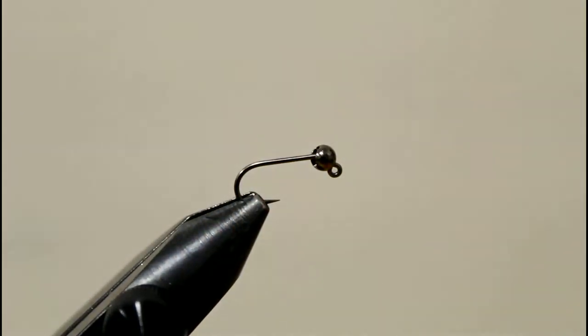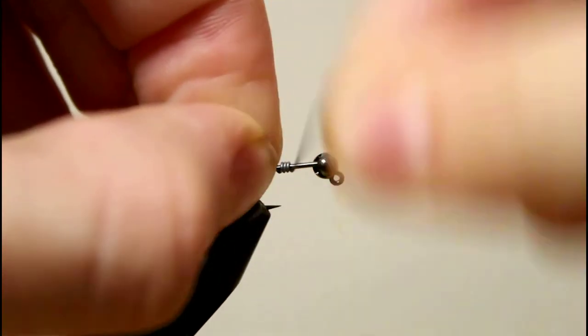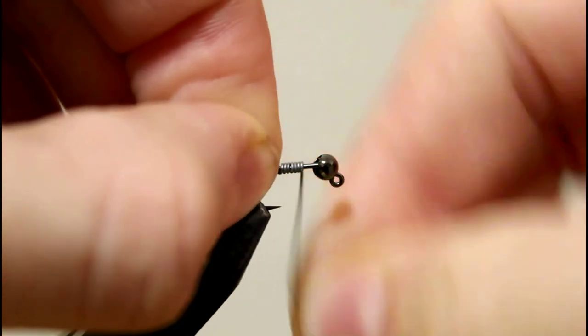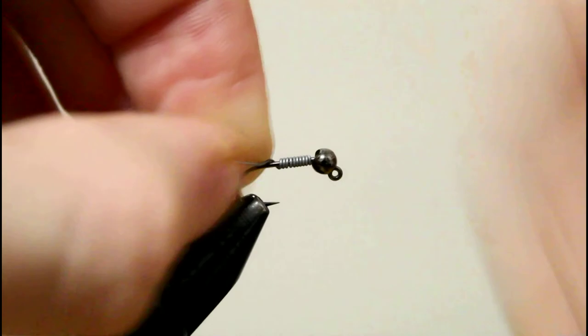We're gonna start off with a size 16 jig hook and a 1/8 inch tungsten bead. I'm gonna start by wrapping some lead wire around the shank of the hook 10 times or so. Five, six, seven, eight, nine, ten. I'm just gonna break that off on both ends, then push that up into the bead to make sure the bead doesn't go anywhere.